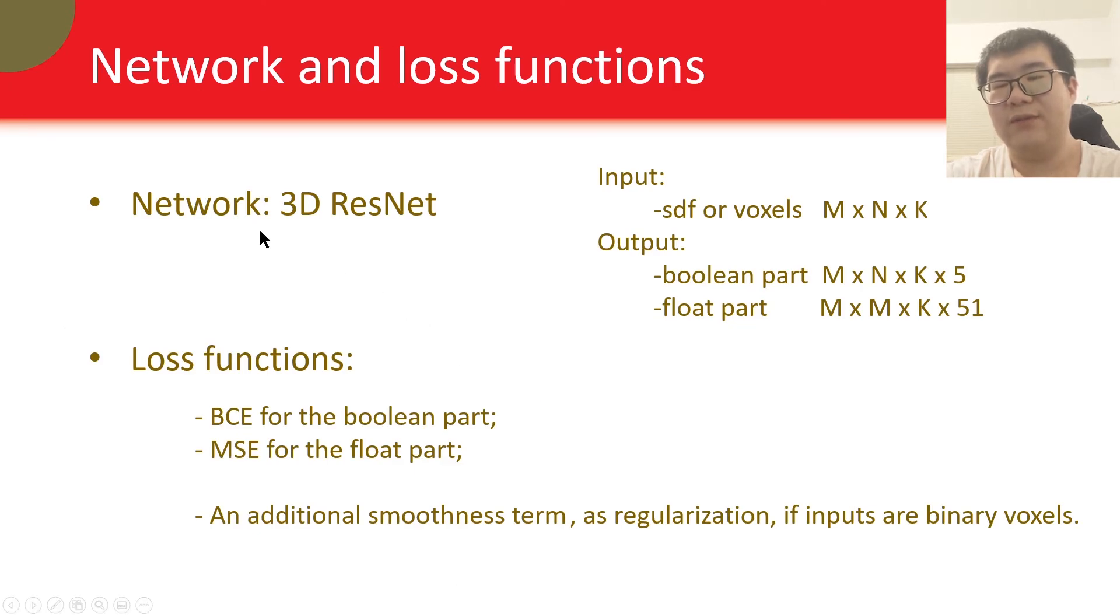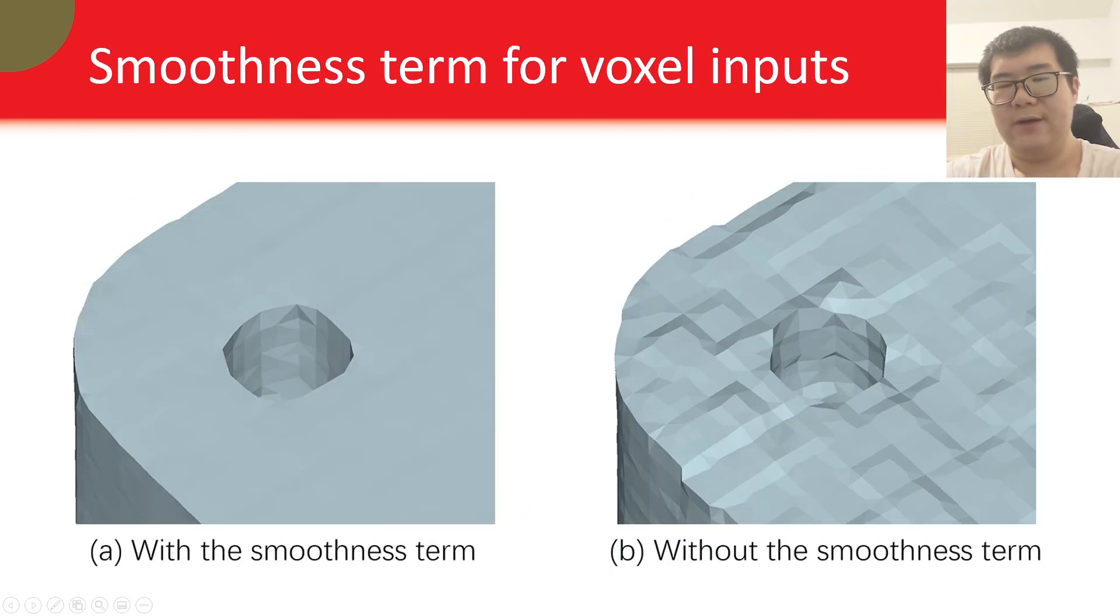After that, we use the 3D ResNet as a network, and use binary cross-entropy loss to train the boolean part, and mean squared error loss to train the float part. If the inputs are binary voxels, we also have an additional smoothness term. The effect of the smoothness term is shown here, because if the inputs are binary voxels, the ambiguity of the output is too strong. So we have to add a smoothness term to regularize that.